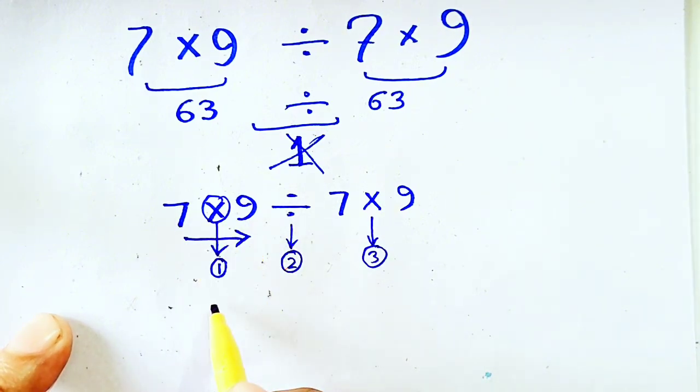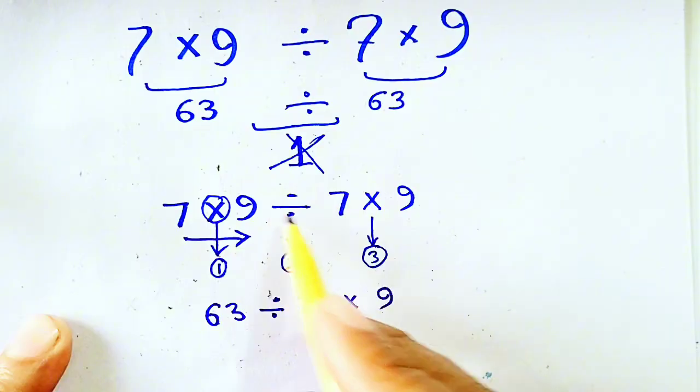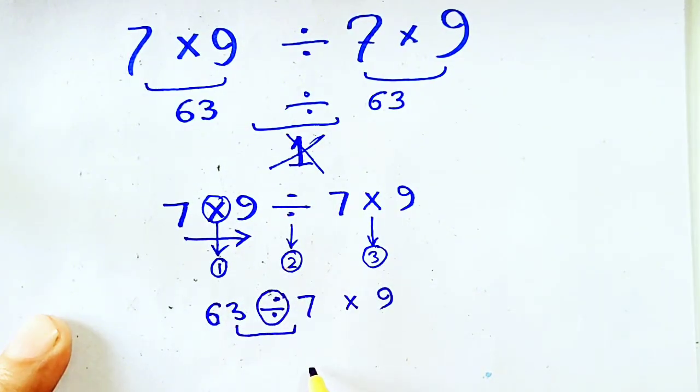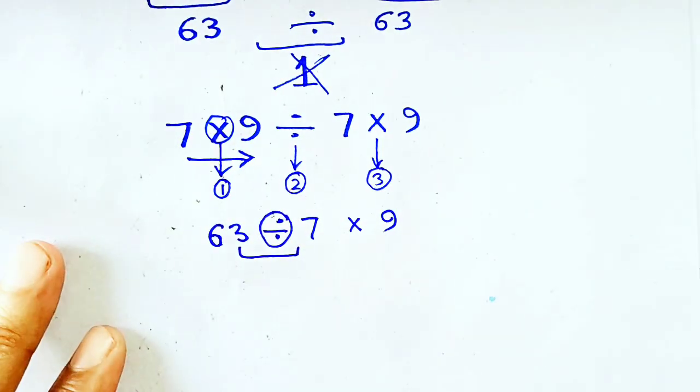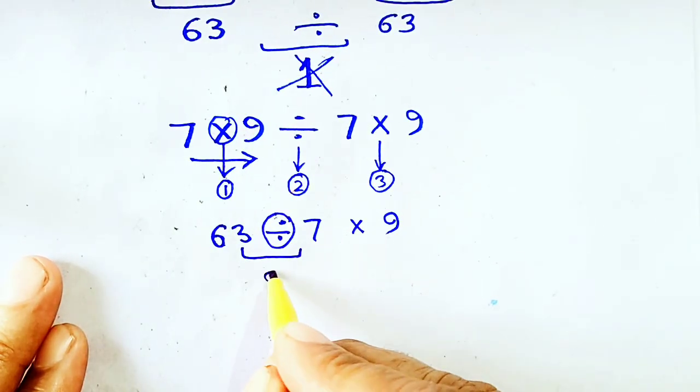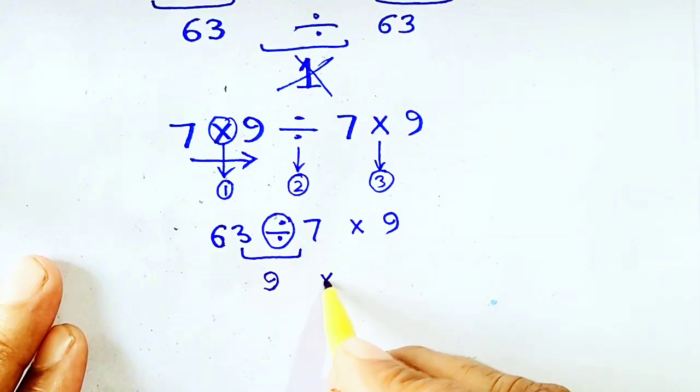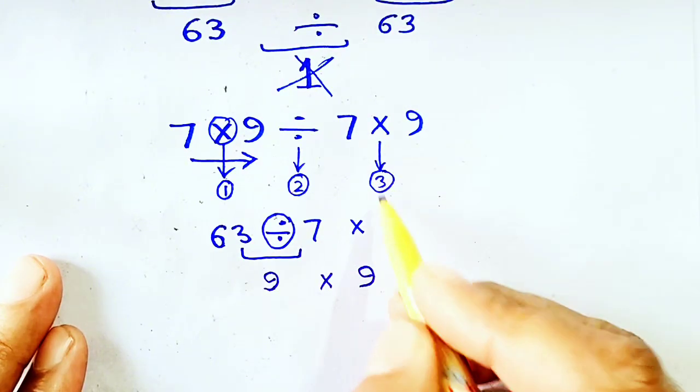So 7 times 9 it will be equal to 63, divided by 7 times 9. Now here is second priority, so 63 divided by 7 will be equal to 9 times 9. Now